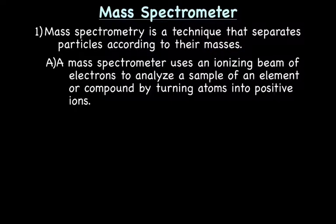I'm just going to give you a quick overview of how this works. A mass spectrometer uses an ionizing beam of electrons to analyze a sample of an element or a compound by turning these atoms or compounds into positive ions. Electrons are shot against the atoms or compounds, and that knocks off an electron from the atom, making the atom a positive ion.